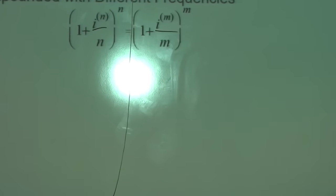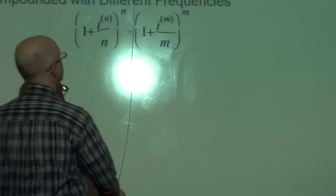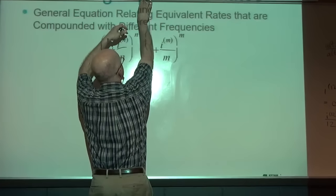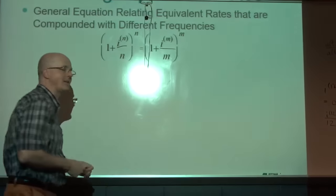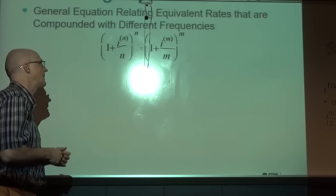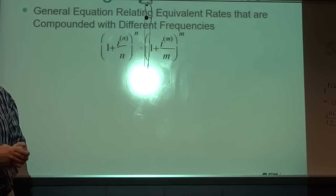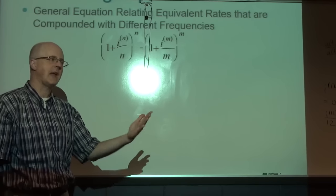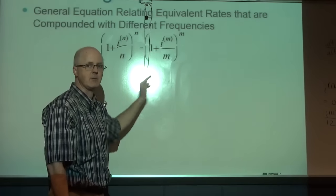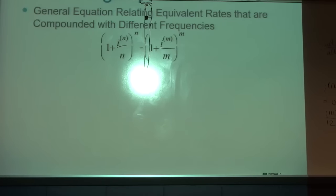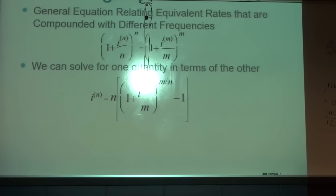General equation relating equivalent rates compounded with different frequencies: i_N is the nominal interest rate when you compound N times per year; i_M is the nominal rate when you compound M times per year. If you want the same accumulated future value after one year, these two things need to be equal. You can solve this equation for one variable in terms of the other.